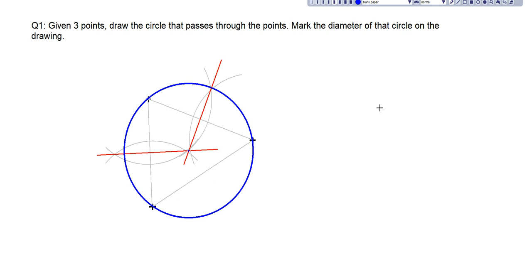So here is the circle that is passing through all three given points. As mentioned in the statement, after drawing the circle, we have to mark the diameter of the circle. To do that, we have to draw a little line pointing towards the center of the circle.